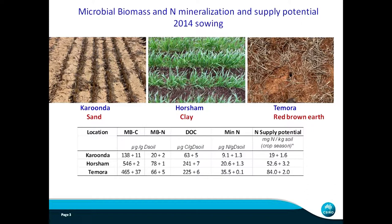For this reason, we labeled wheat plants with the stable isotope 15N, so we could track nitrogen from a cereal crop through different pools to the next crops. We did that at three different sites: Karunda, which has anomaly sand; Horsham, a heavy clay; and Tamora, which is a red-brown earth. These three sites were chosen because they are in different regions and also differ in organic matter levels and microbial biomass, as an indicator of biological activity.